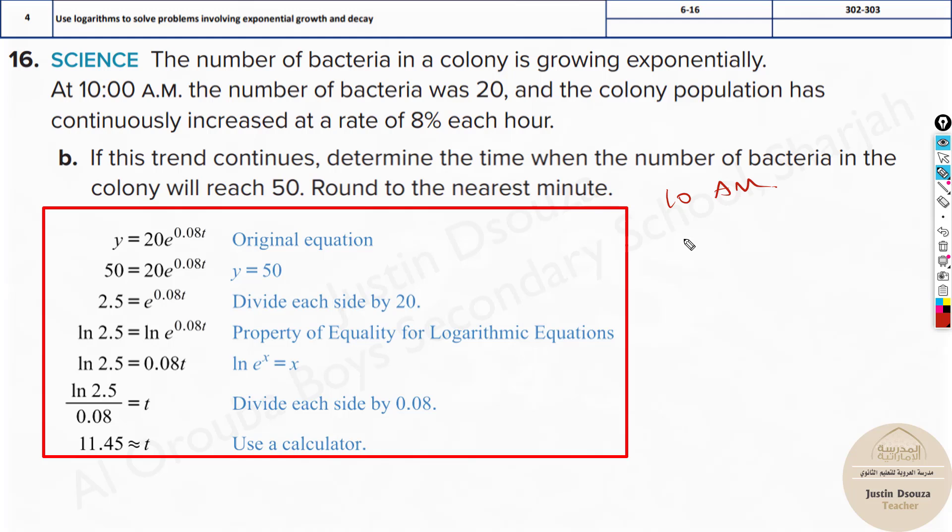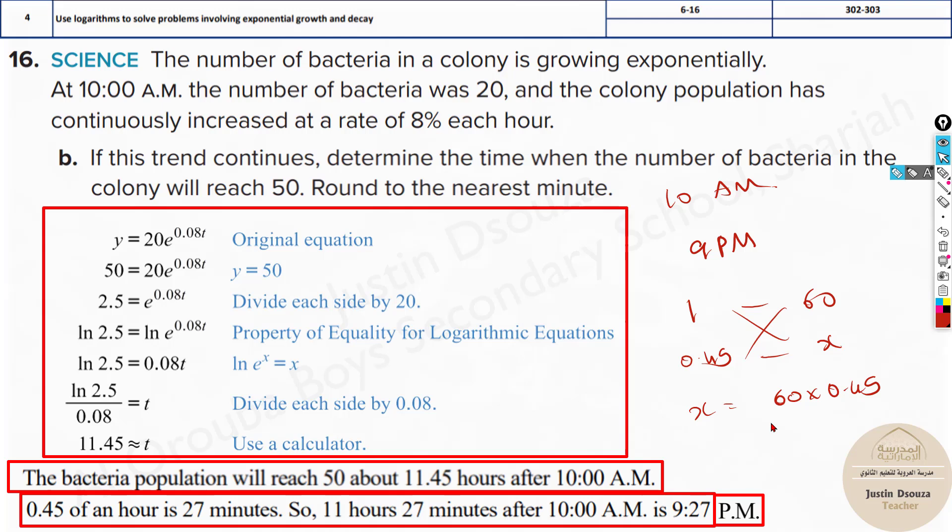If you add 11 hours, it will be 9 p.m. But what about this 0.45? There are different methods to do it. The easiest way is cross-multiplication. Let's consider 1 as 60 minutes. How much will be 0.45? How many minutes? X. Cross-multiply: X will be equal to 60 times 0.45. You can just put it in the calculator and you will get the answer. It will be less than 30 for sure. It is 27.